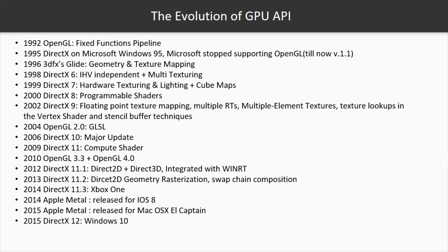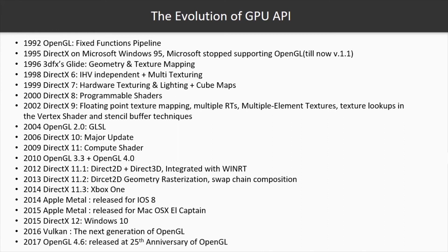For example, the DirectX team released minor versions for DirectX 11, which integrated DirectX into the new Windows 8 core called WinRT. Meanwhile, Apple started quietly removing OpenGL support and proposed a new GPU API called Metal for their iOS and OS X operating systems. In 2015, Windows 10 was released containing a new SDK for the next generation of DirectX called DirectX 12. The following year, the next generation of OpenGL called Vulkan was released by the Khronos Group. Finally, in 2017, OpenGL released its final version for its 25th anniversary.